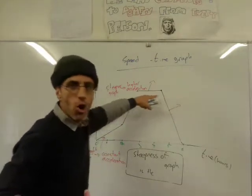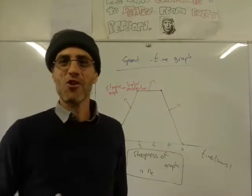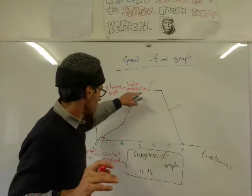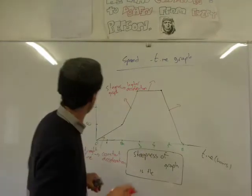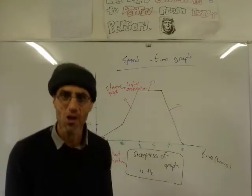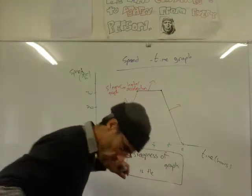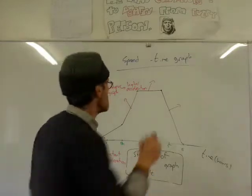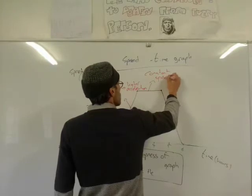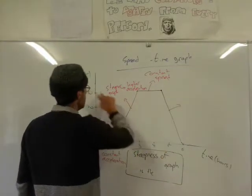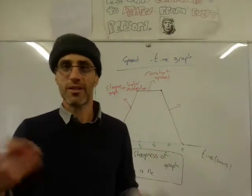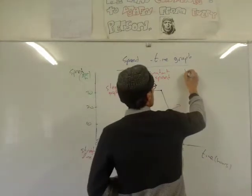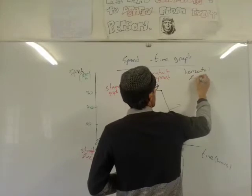The steepness in a speed-time graph represents the acceleration, not the speed. What about a flat, horizontal line? Some of you will say a horizontal line means stationary — but ask yourself, what is our speed between the third and fifth minute? The speed is 30 kilometers an hour, so we can't be stationary if we're moving at 30 km/h. A horizontal line in a speed-time graph is not stationary — it's constant speed. Between the third and fifth minute the speed was always 30 km/h, so it's constant speed.